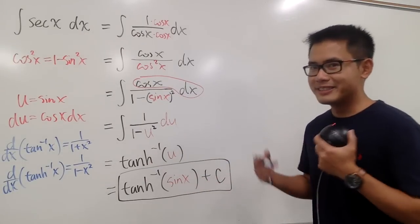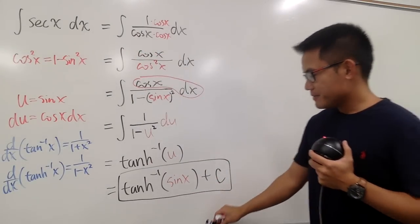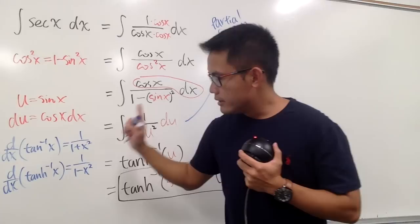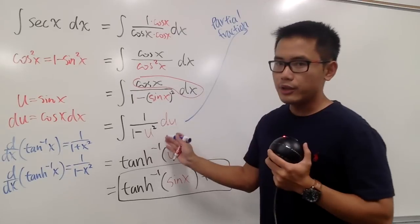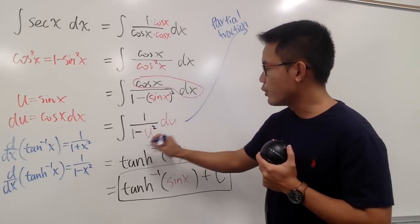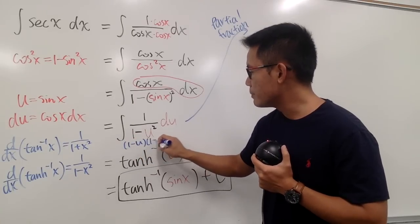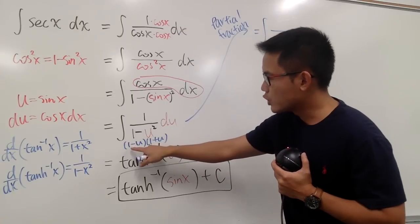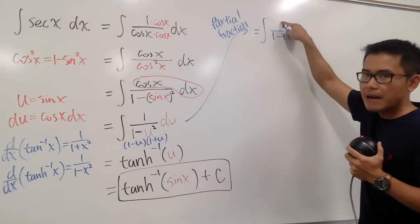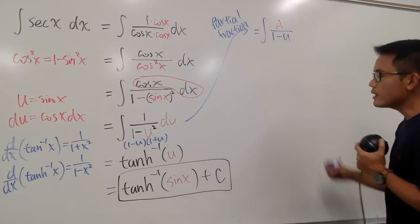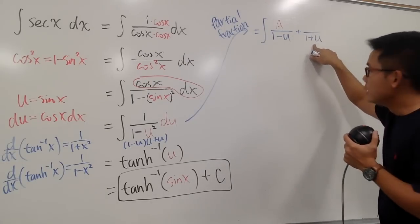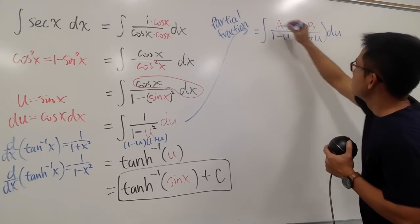So that is the first approach within the second method. We have another approach using partial fractions. Without using hyperbolic functions, we can factor the denominator: 1 minus u squared factors as 1 minus u times 1 plus u. We break the fraction into two partial fractions: A over 1 minus u plus B over 1 plus u, where A and B are constants to be determined.